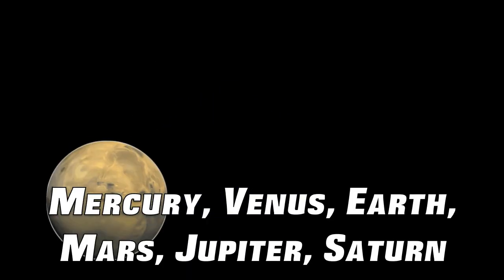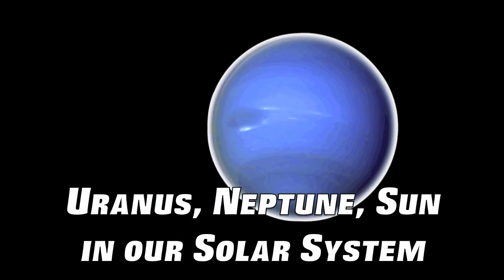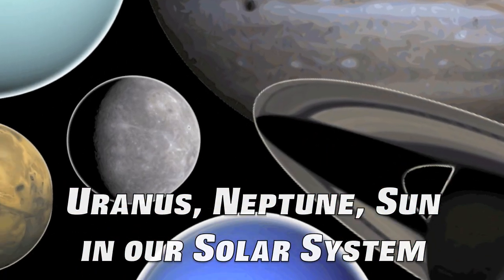Mercury, Venus, Earth, Mars, Jupiter, Saturn, Uranus, Neptune, Sun in our solar system.